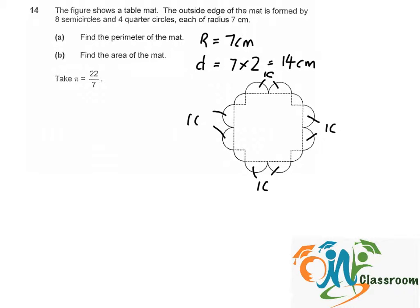And what we have left will be the 4 quarter circles down here. So these 4 quarter circles, if we combine them together, it will give us another perimeter of 1 circle.